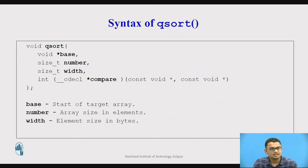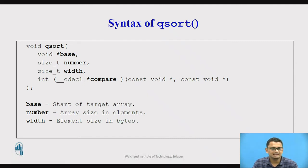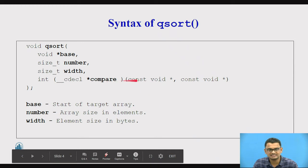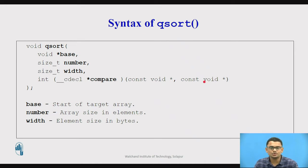The third parameter is the element size in bytes. You can find this using the sizeof operator, passing the data type — integer, float, or whatever type is in the array. The fourth parameter is a pointer to a function that compares two values. We use two pointers to compare two values in the array.